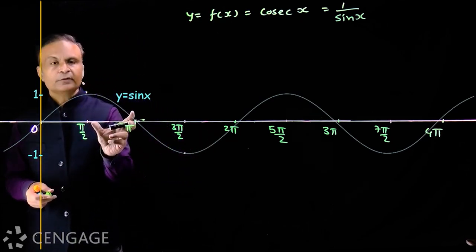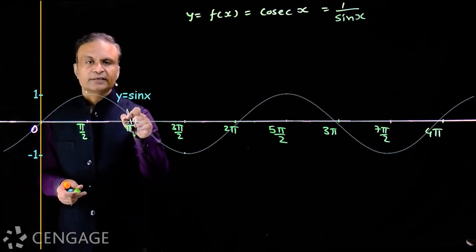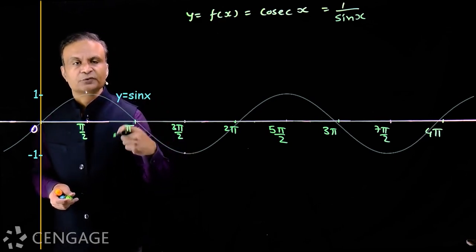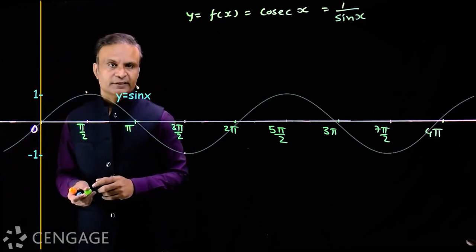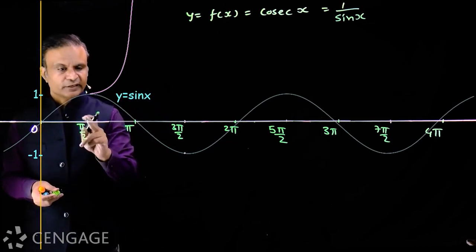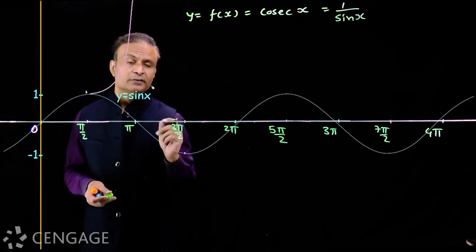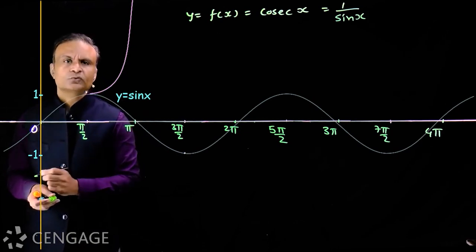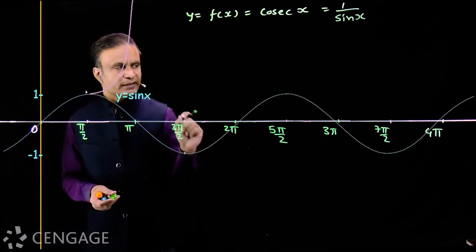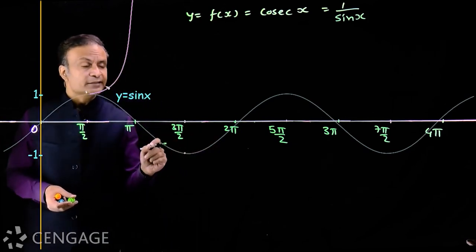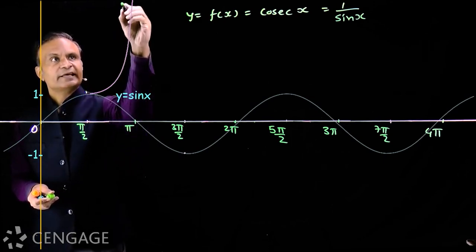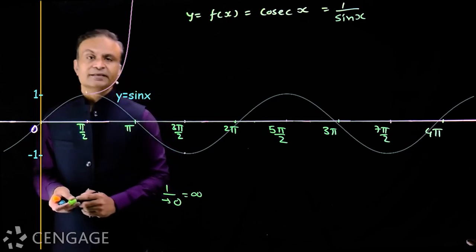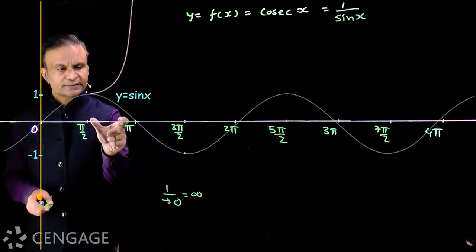Now consider the interval π/2 to π — the second quadrant. Here sin x decreases from 1 to 0. Since sin x decreases, its reciprocal cosec x will increase. We cannot take x = π because cosec π is not defined. When x is close to π but slightly less, sin x approaches 0, and when sin x approaches 0, cosec x approaches plus infinity. So 1 divided by a value tending to 0 tends to plus infinity. This gives us the graph of cosec x in the second quadrant.